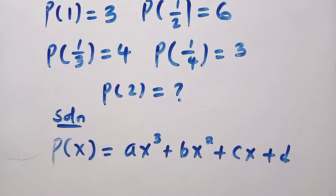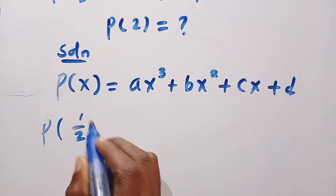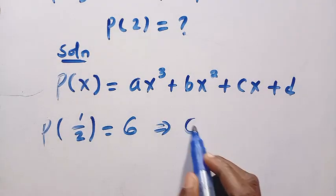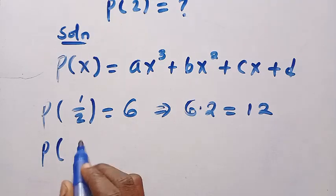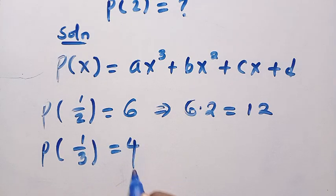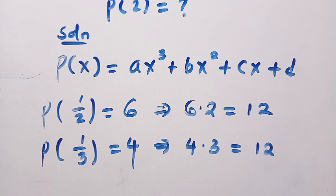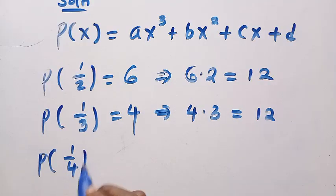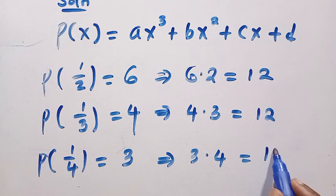Looking at this, it follows a unique pattern. For P of 1 over 2, that equals 6, and if we multiply 6 by 2, we get 12. For P of 1 over 3, that equals 4, and 4 multiplied by 3 gives 12. For P of 1 over 4, that equals 3, and 3 multiplied by 4 also gives 12. All of these give us 12.